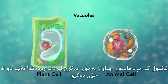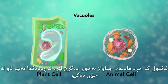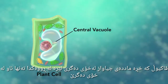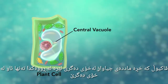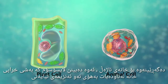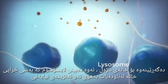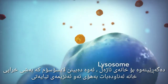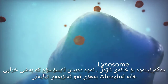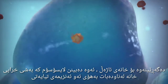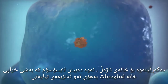Vacuoles are sac-like structures that store different materials. Here in this plant cell, the central vacuole stores water. Going back to the animal cell, you will see an organelle called a lysosome. Lysosomes are the garbage collectors that take in damaged or worn-out cell parts. They are filled with enzymes that break down this cellular debris.